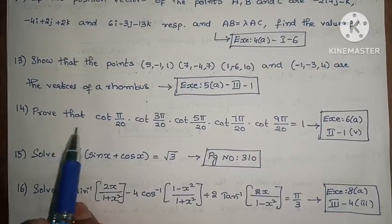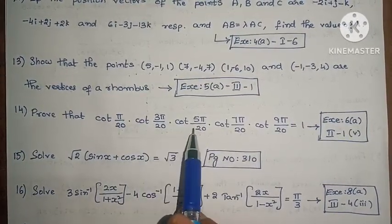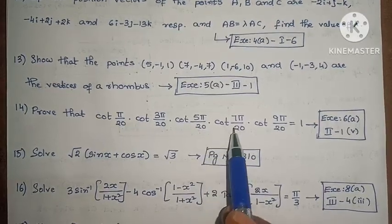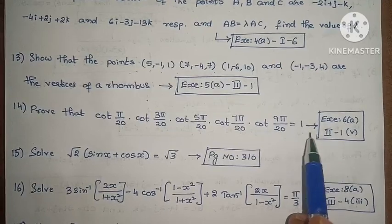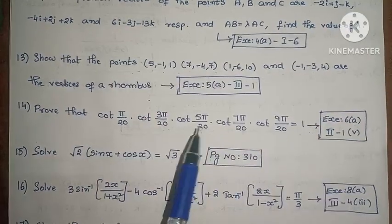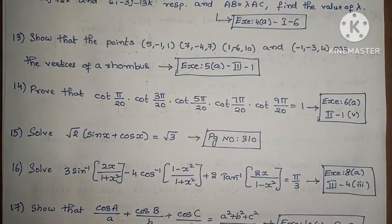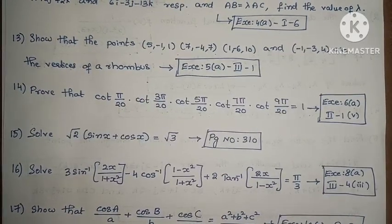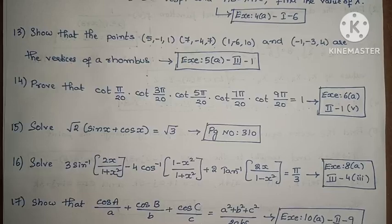Next, students, prove that cot pi by 20 into cot 3pi by 20 into cot 5pi by 20 into cot 7pi by 20 into cot 9pi by 20 equals 1. Exercise 6, Second Roman, First, Fifth one. This is a 2 marks problem, but here it's worth 4 marks. If the question paper is easy, some easy problems from 2 marks can be given 4 marks.